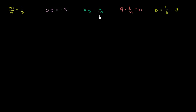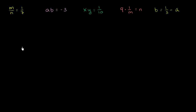I've written some example relationships between two variables — between m and n, between a and b, and between x and y. What I want to do in this video is see if we can identify whether the relationships are a direct relationship, whether they vary directly, or maybe they vary inversely, or maybe it is neither.